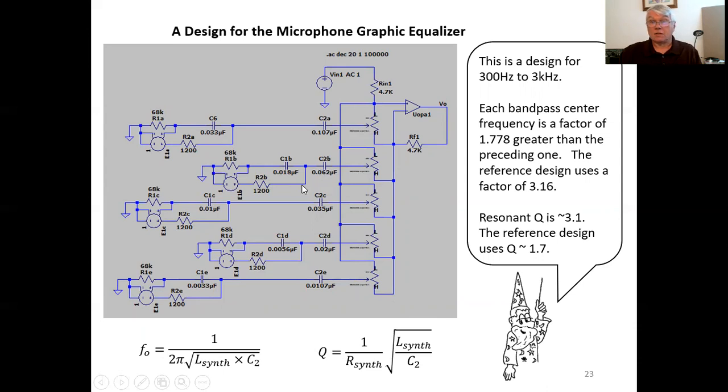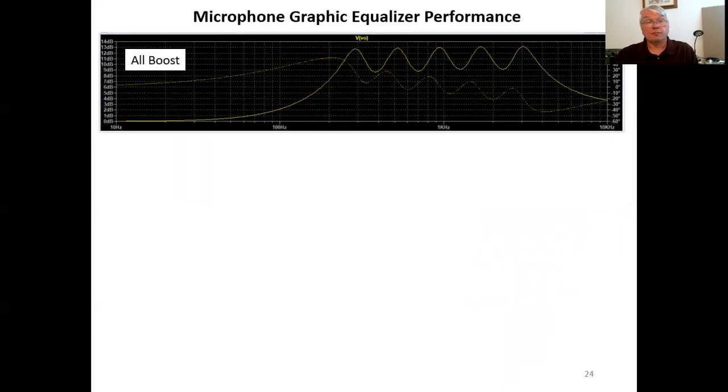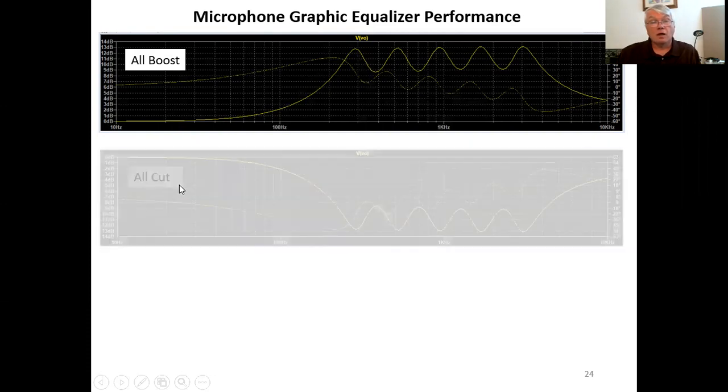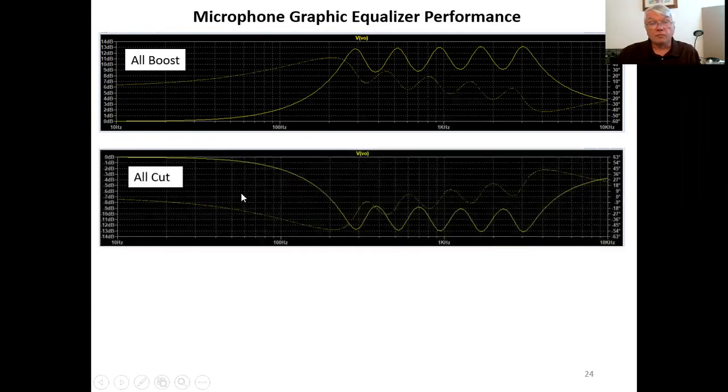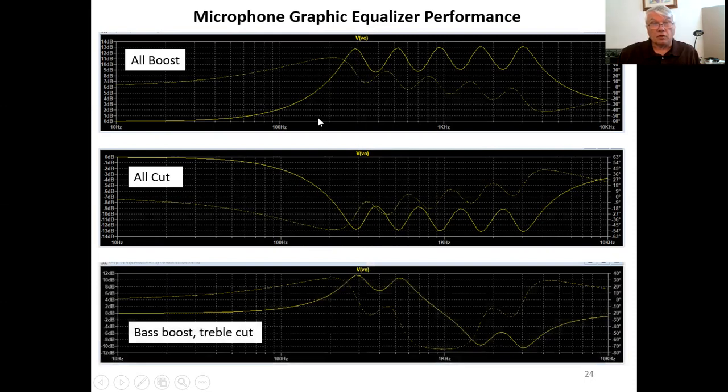Okay so let's see how this thing works. Here it is all boost and this is graph from 10 hertz to 10 kilohertz and we're getting a boost that maxes out at somewhere around 13 decibels. Here's all cut and we get the same reduction and or a mirror image reduction I should say and here's base boost treble cut. I think we got it.